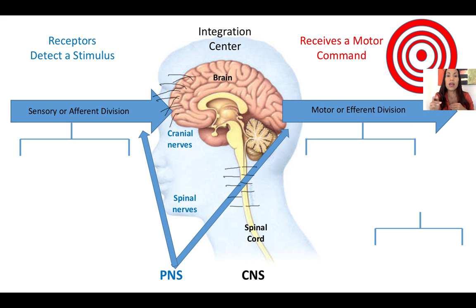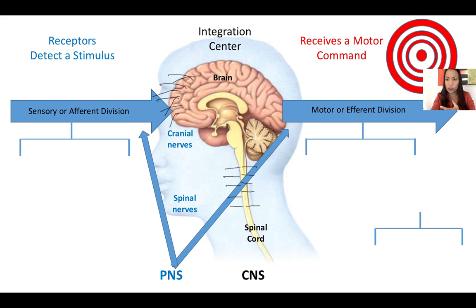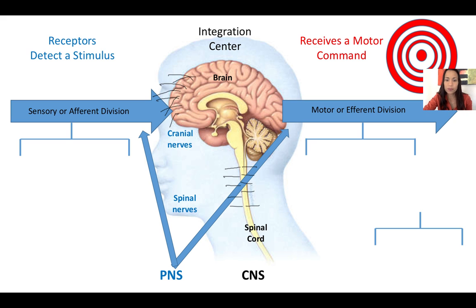Motor is easy to remember because you're carrying a motor command — an order for the muscle to contract and produce movement. Efferent means it is the exit — it is going to the effector, carrying the information to the effector. So those are the two main subdivisions of the peripheral nervous system.